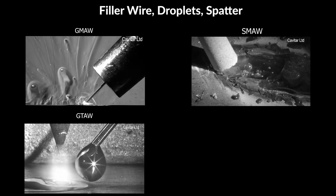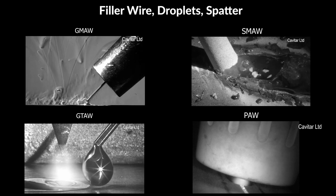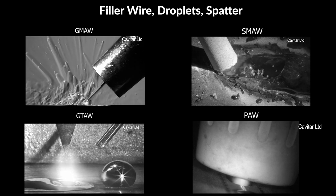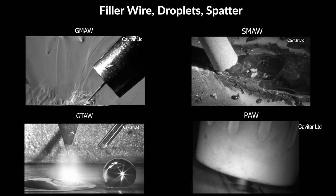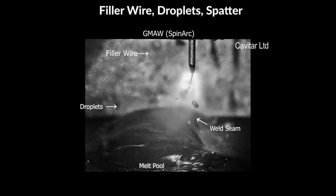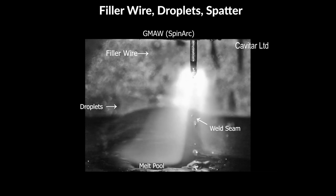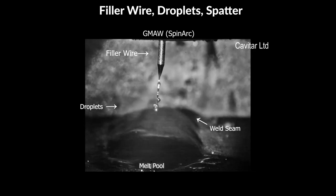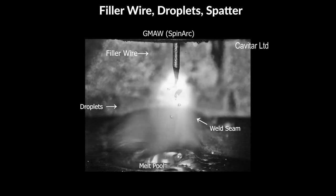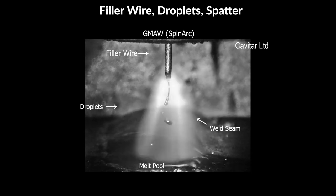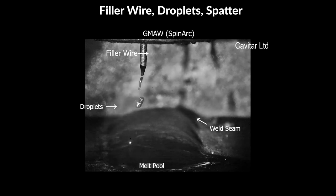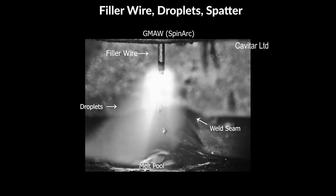In GTAW and PAW, the filler wire is fed to the weld area from outside the welding torch, as a non-consumable electrode is used to form the arc. Droplets: as the filler wire melts, droplets of the filler metal are transferred to the workpiece to form the weld seam. The main reason to image and study droplets is to identify problems with regular droplet formation and optimize the process to get rid of any issues. The position of the filler wire in relation to the groove is also crucial to achieving a well-formed seam.